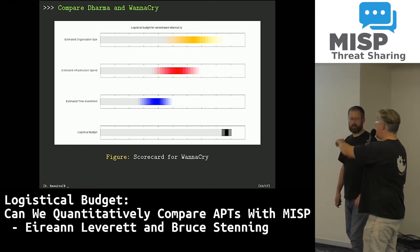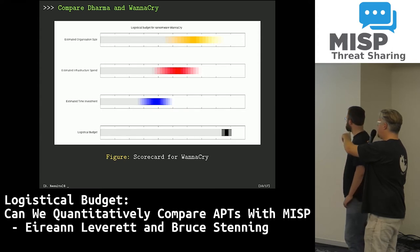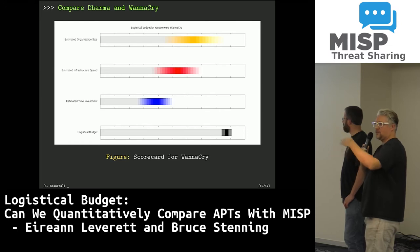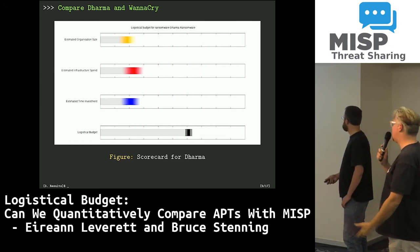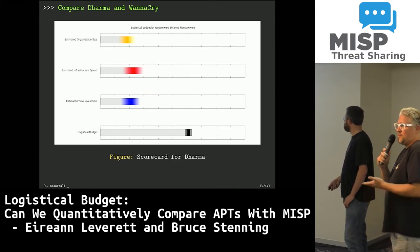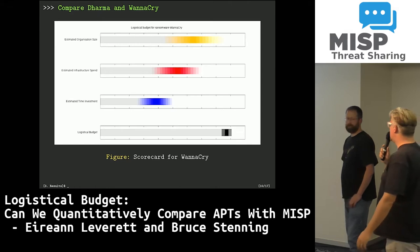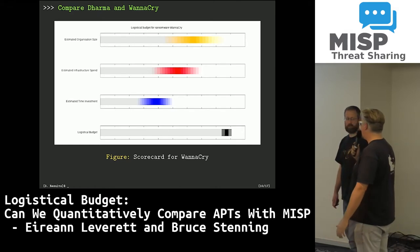The score across the bottom: estimated organizational size is the yellow one, infrastructure spend in money is the red one, time is the blue one, and the last one in black is the aggregation of those three scores. Clicking back and forth between these two, you get the idea that Dharma probably spent less money, manpower, and time than WannaCry. That's all we really wanted to do with this — but you don't have to do this just for ransomware, you can do it for other things too.